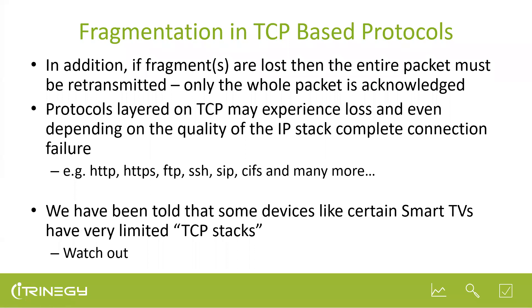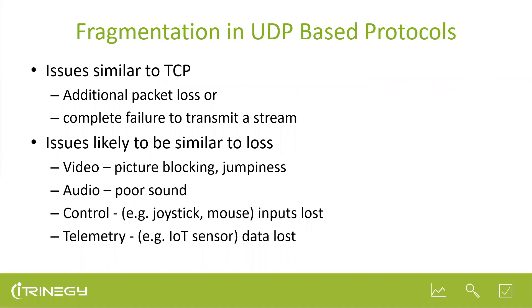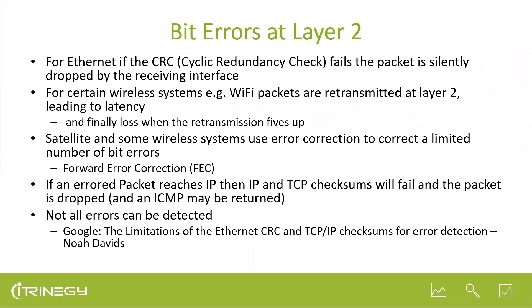Protocols layered on TCP will experience loss if fragments don't arrive. Be aware that some smart TVs and embedded devices have very limited TCP implementations, so they may not handle reassembly correctly. For UDP-based protocols, issues are similar to TCP but with no retransmission mechanism — losing fragments turns directly into packet loss. On video, you'll get picture blockiness or jumping; audio will have poor quality as packets are lost.